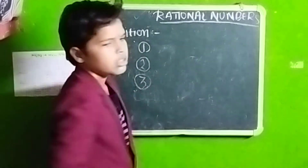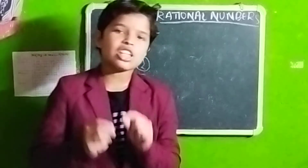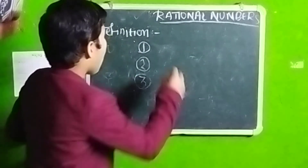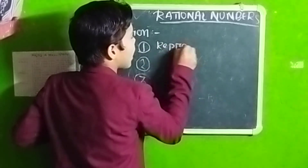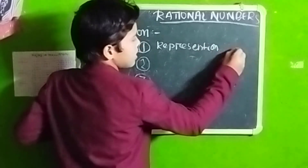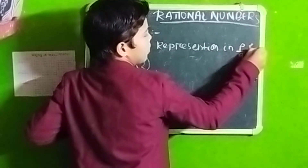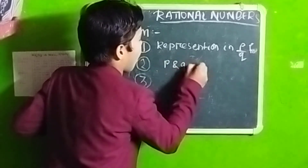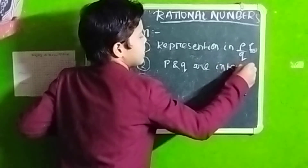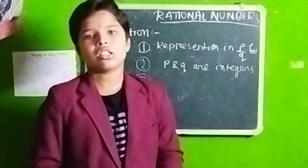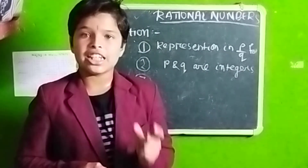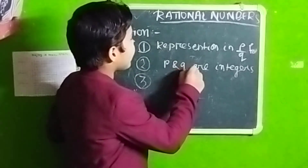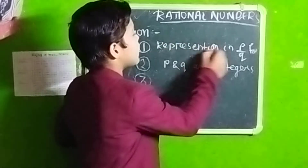All you need to understand is three points to define Rational Numbers. The first point is that all Rational Numbers are represented in P by Q form. The second point is that P and Q are integers — that means either positive, negative, or zero. All natural numbers including all negative numbers are called integers. So P and Q must both be integers.